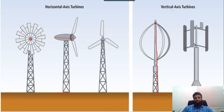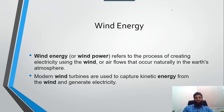We will discuss in detail the working principle of these two axis wind turbines. First of all, what is wind energy? Wind energy refers to the process of creating electricity using wind or air flow that occurs naturally in the earth's atmosphere.